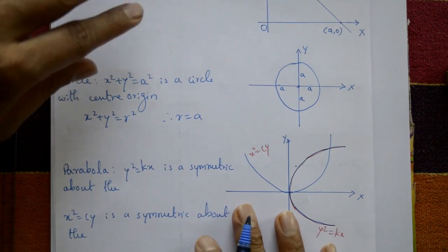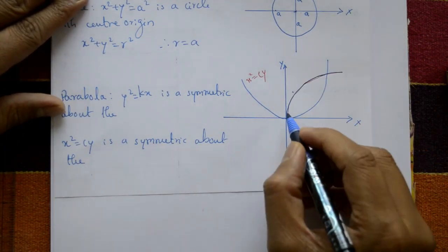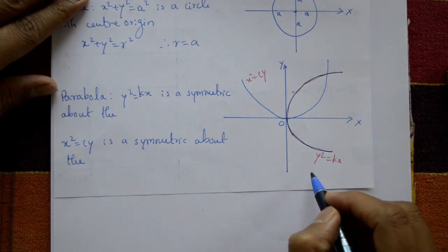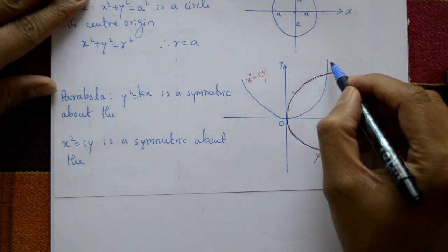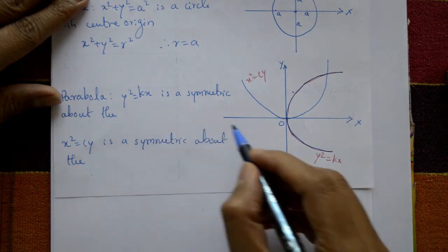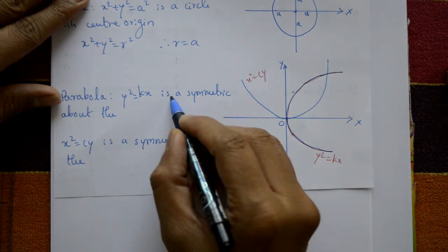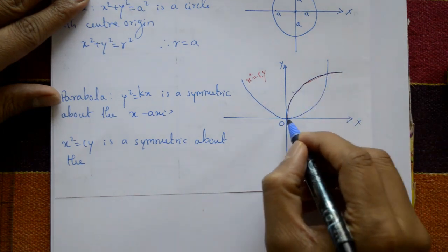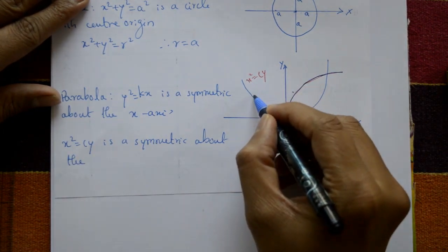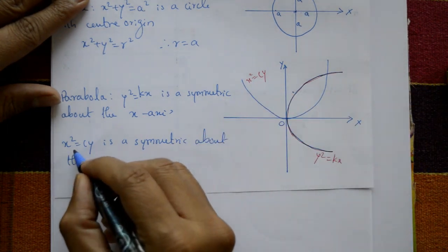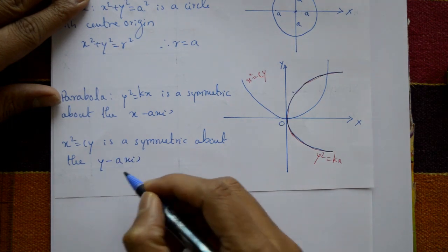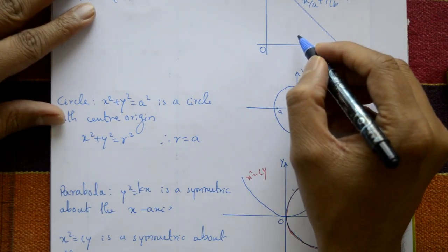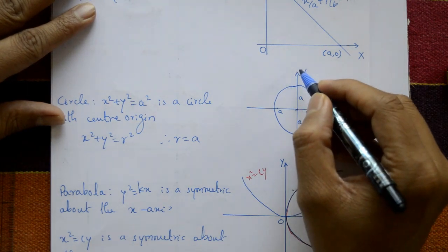Now parabolas. One equation is y squared equals kx, and the second is x squared equals cy. y squared equals kx is symmetric about the x-axis. x squared equals cy is symmetric about the y-axis. Remember these points, because this diagram is very very important in change of order of integration.